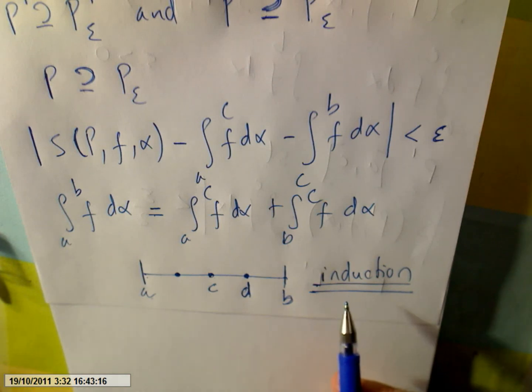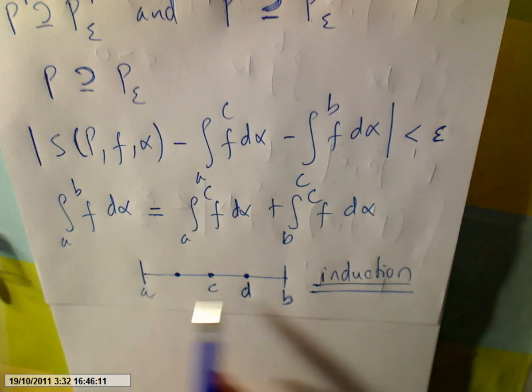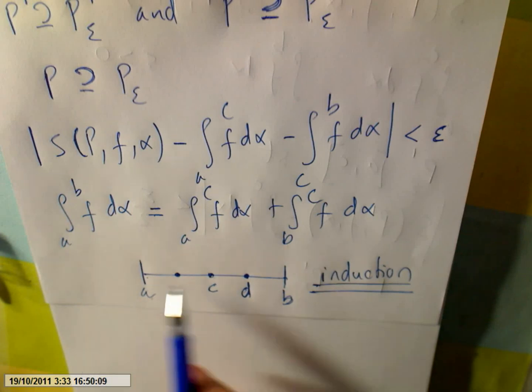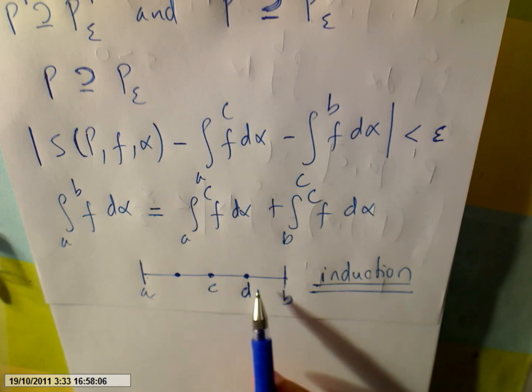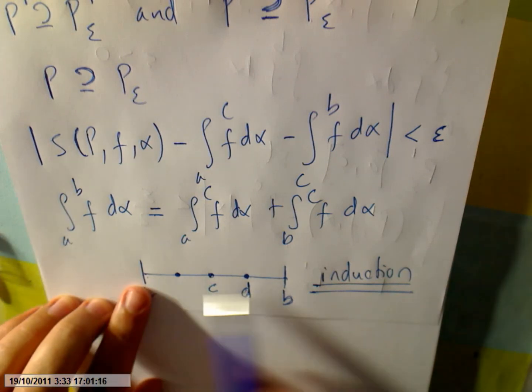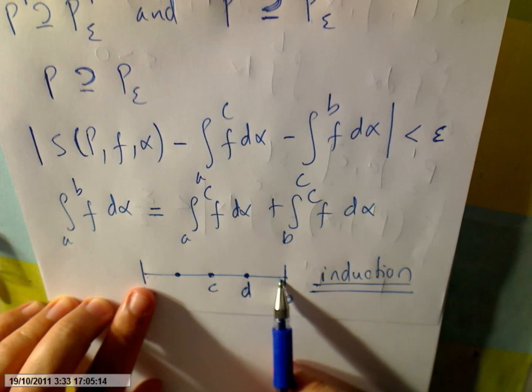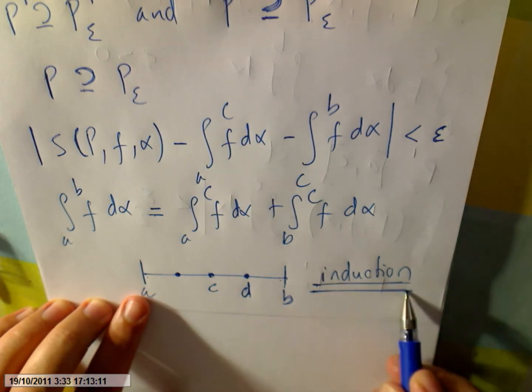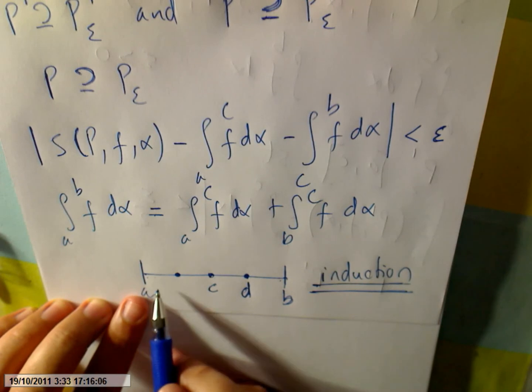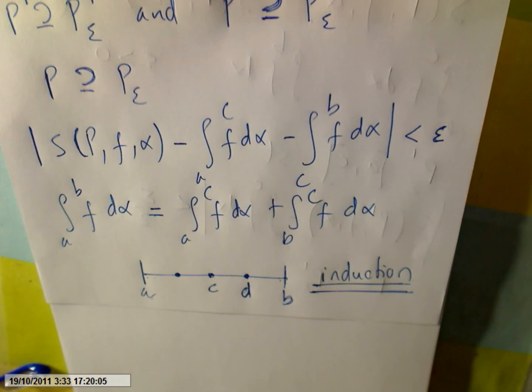I also want to mention one more thing. If you know that the integral from a to b of F exists and C is a point in [a,b], then it is true that F is Riemann integrable on [a,c]. For any decomposition of the interval [a,b] into any finite number of subintervals, it is easy to prove the same result.